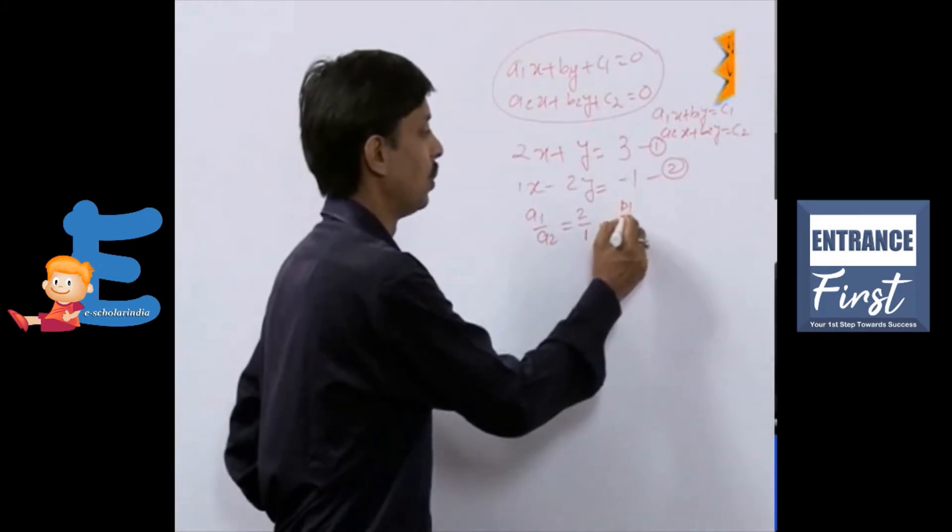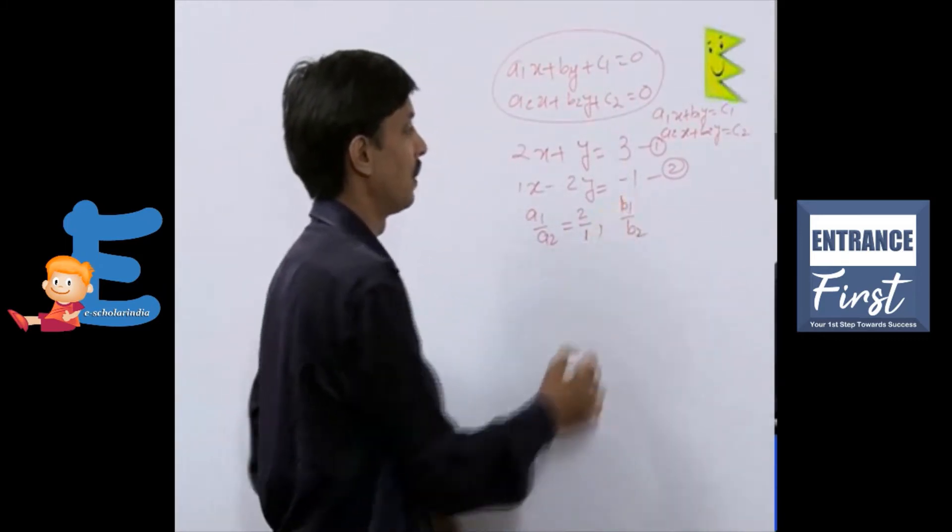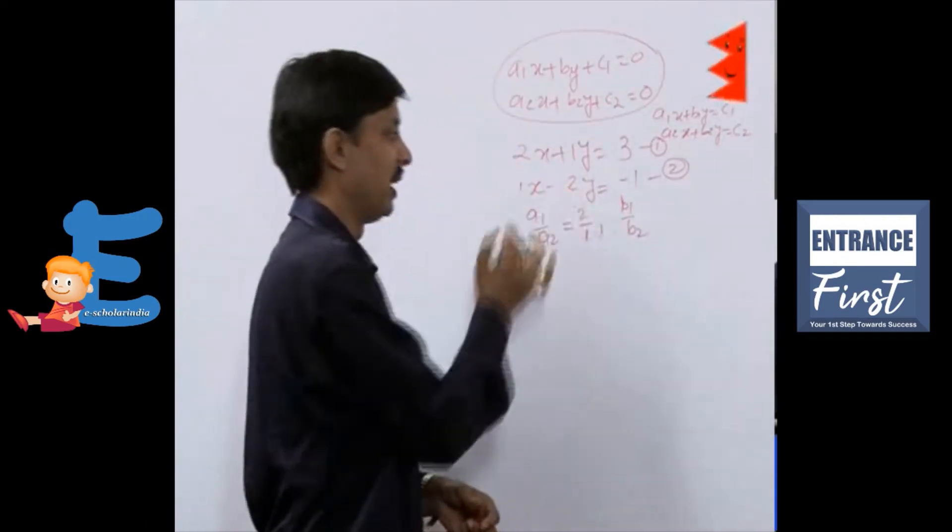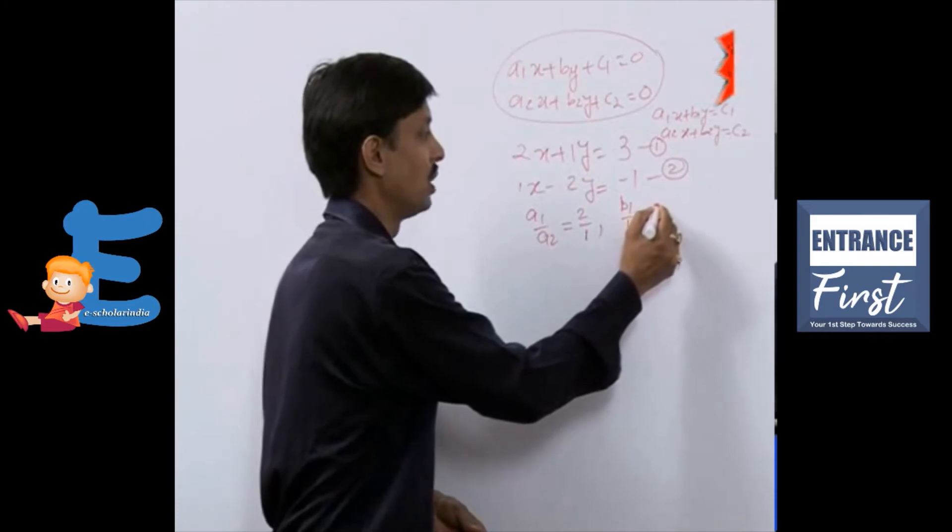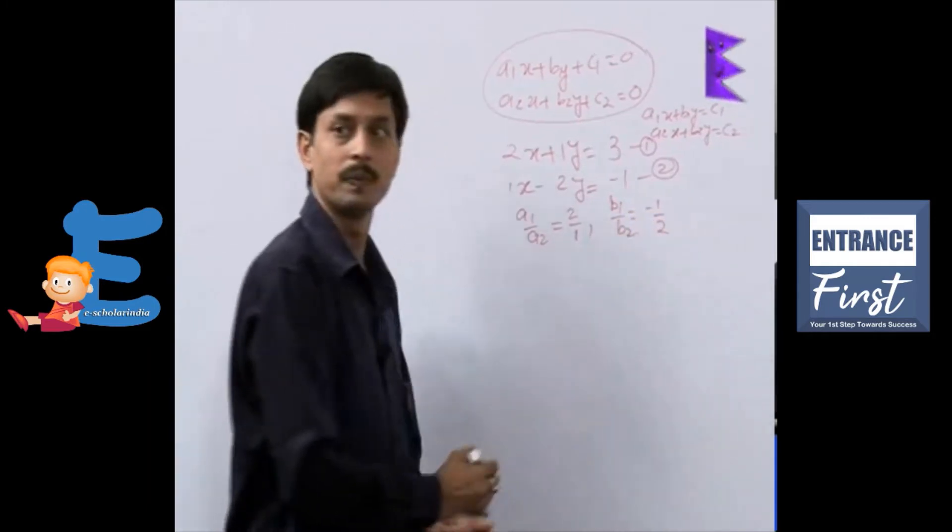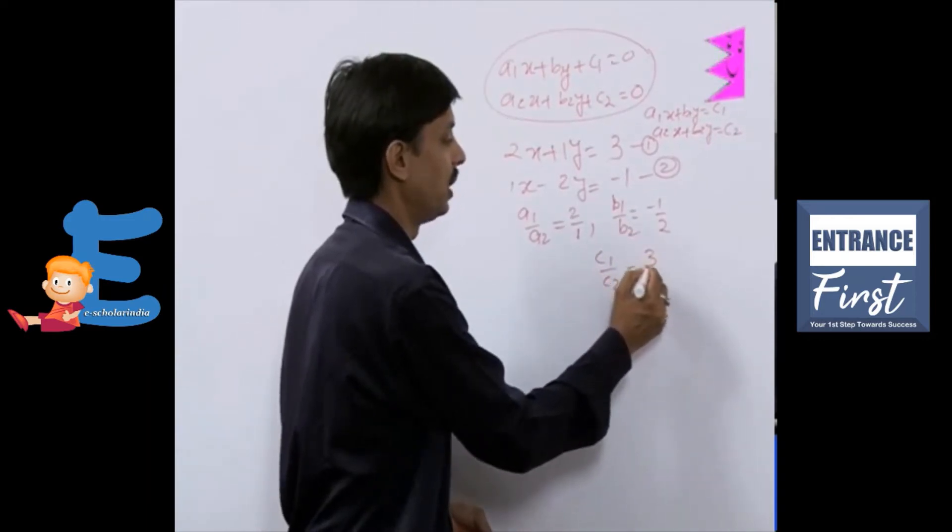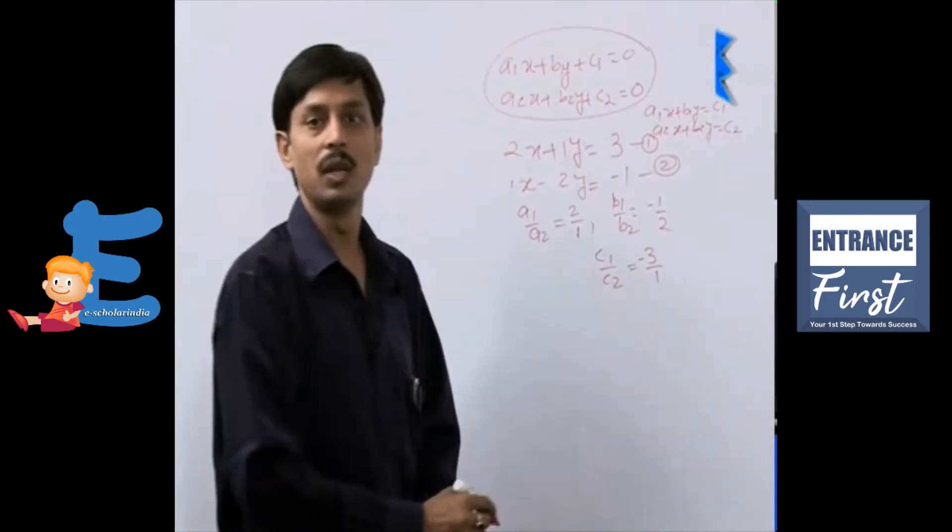Ratio of b1 by b2, by comparing with the standard form, here 1, here minus 2. So, b1 by b2 is coming out to be minus 1 by 2. And c1 by c2, it is coming out to be 3 by minus 1, that is minus 3 by 1.